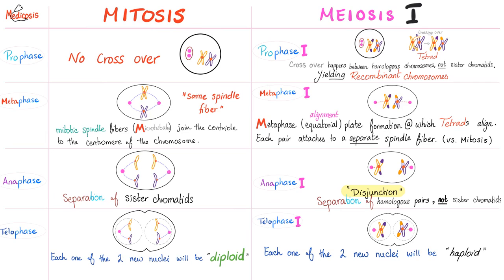In metaphase of mitosis, chromosomes align in the middle. The same spindle fiber and the same centriole is hanging both chromosomes at the same time. However in meiosis one, there is one spindle on this side and one for the other — they are separated. In anaphase of mitosis you see separation of the sister chromatids, but in meiosis one you have separation of the homologous pairs, not of the sister chromatids. In mitosis the centromere gets split in half — one half here and one half there — but in meiosis one the centromere remains intact.